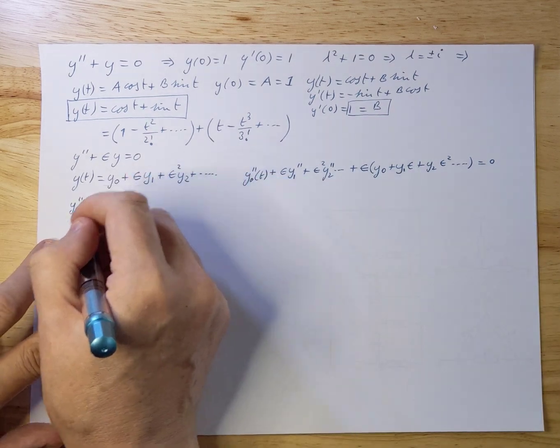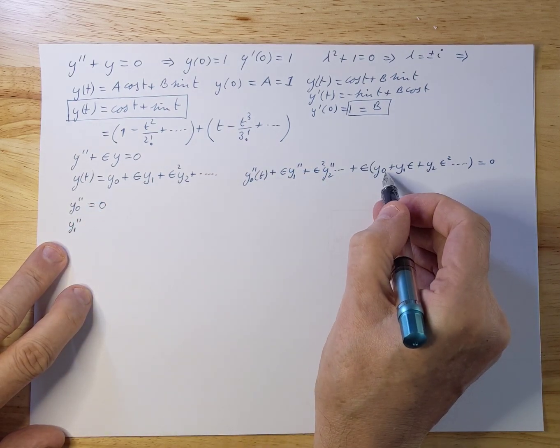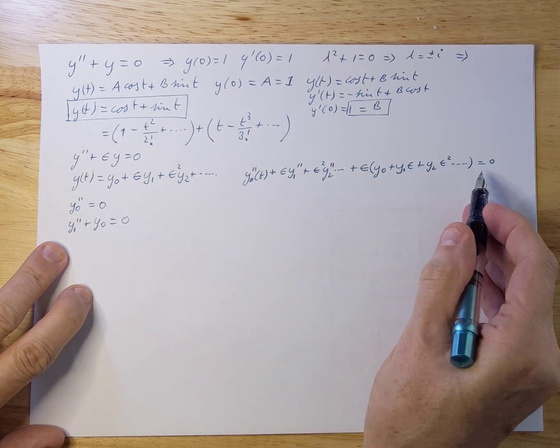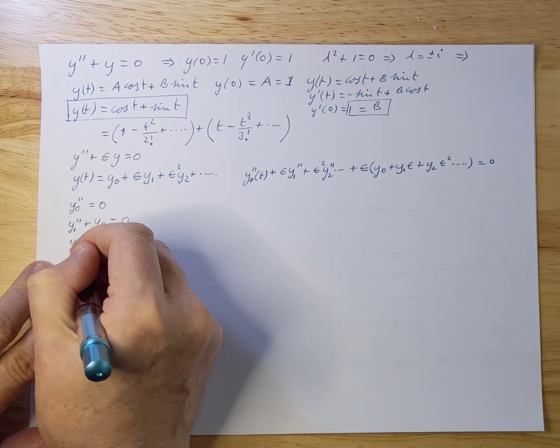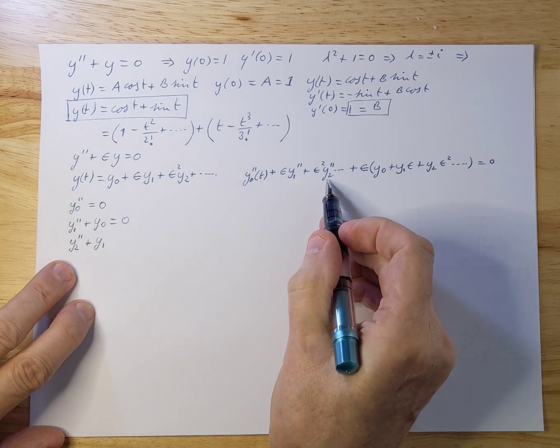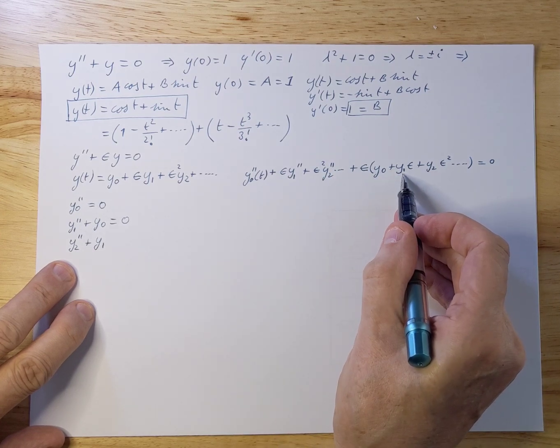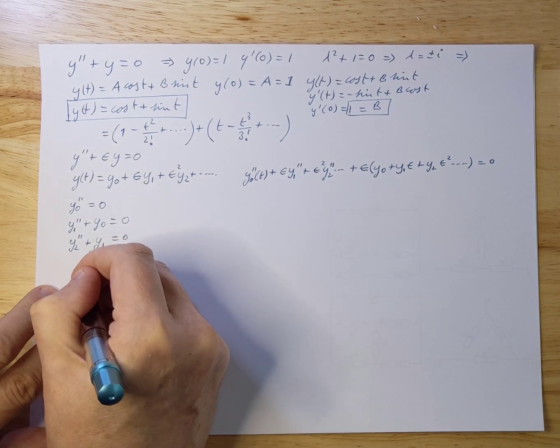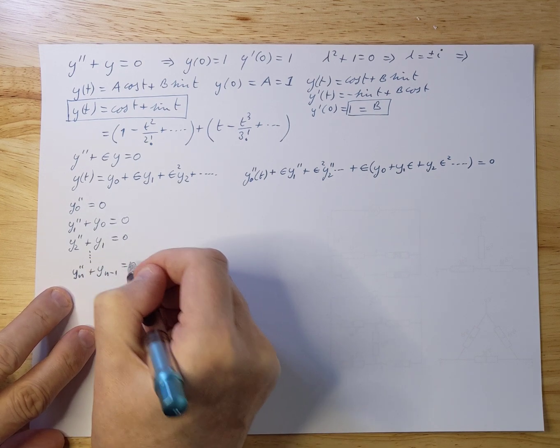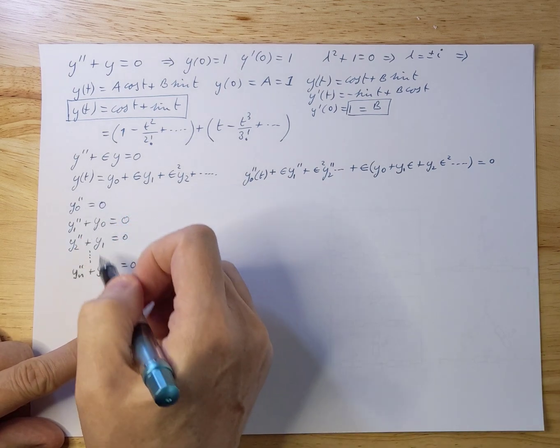For the second equation, we get y₁ double. If we take epsilon out, we have a y₁ double here and we have a y₀ here, plus y₀. And that also has to be 0. And there are no other terms. Everything is higher in order. So let's do one more. y₂ double plus y₁. If you take epsilon squared plus y₁ equals 0. So if you go all the way down, you get yn double plus yn-1 equals 0. So all these differential equations, we now have to solve. But they are really simple.